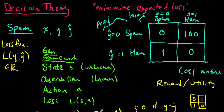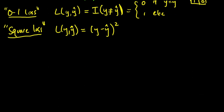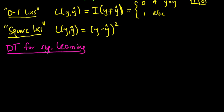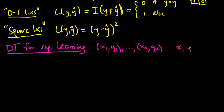Let's start to think about decision theory in the context of supervised learning. In supervised learning, we've got some data — our x's and y's. Each x is typically some vector, and the y's could be the class or the value in the case of regression. We get some new x, and we have to predict the corresponding y for that x. So we predict a y-hat.